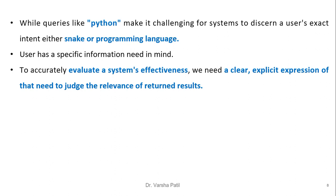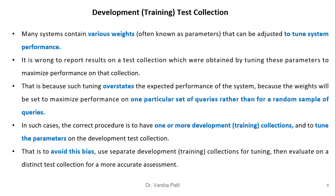Ambiguous queries like 'python' make it challenging for a system to discern the user's exact intent — whether they mean the snake or the programming language. Users always have a specific information need in mind, so to accurately evaluate system effectiveness, users should give a clear, explicit expression of that need to help judge the relevance of retrieved results.